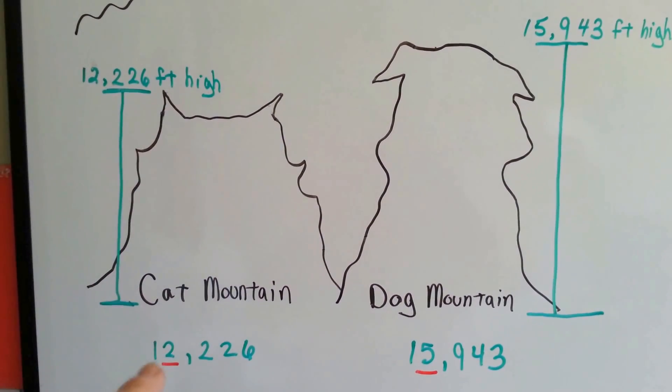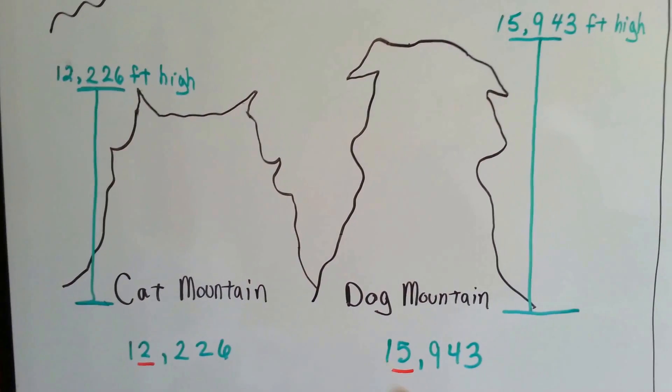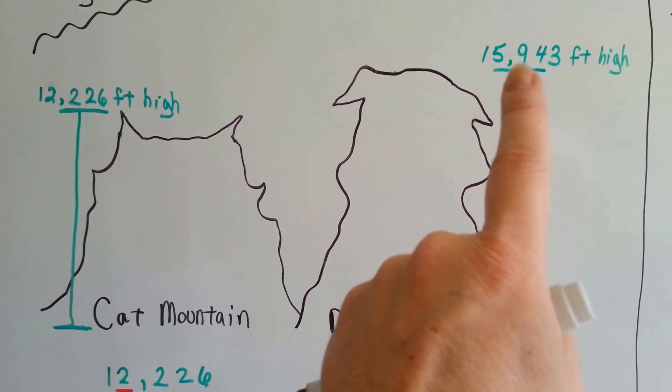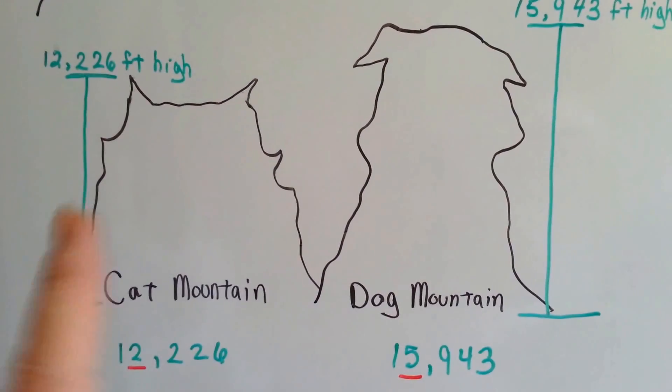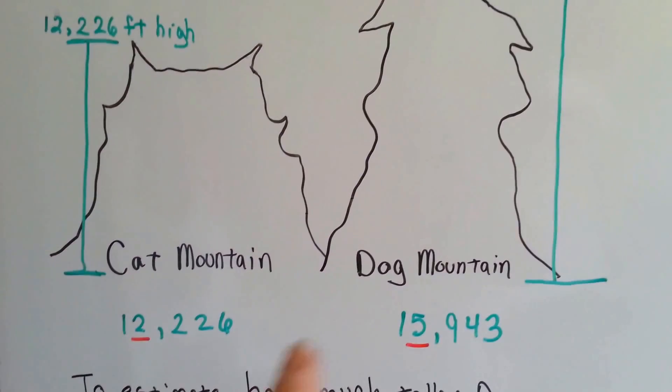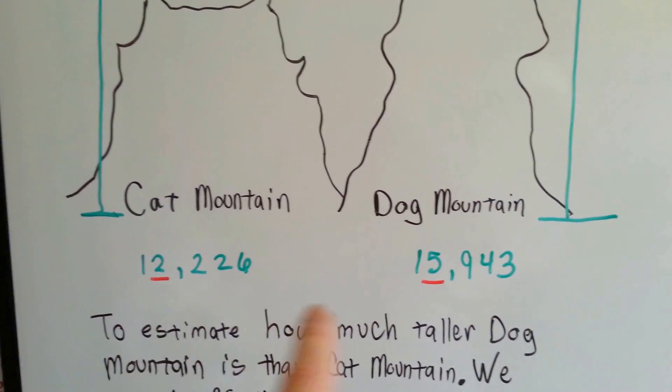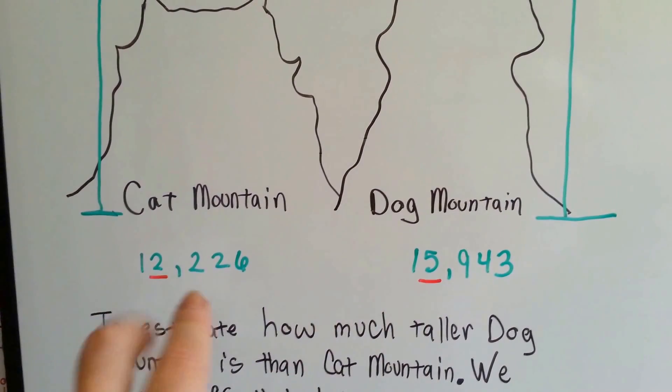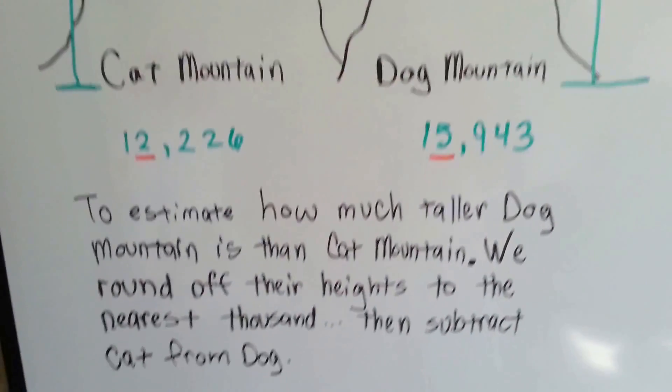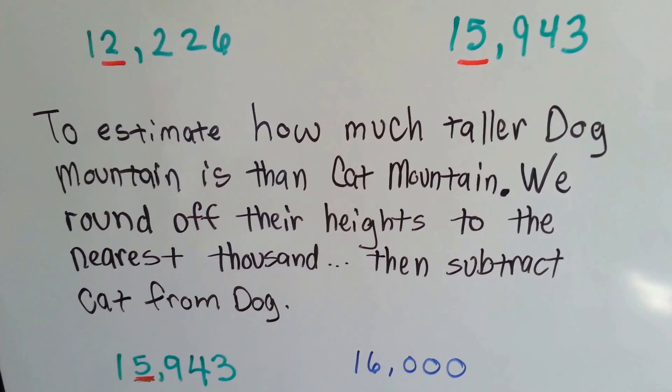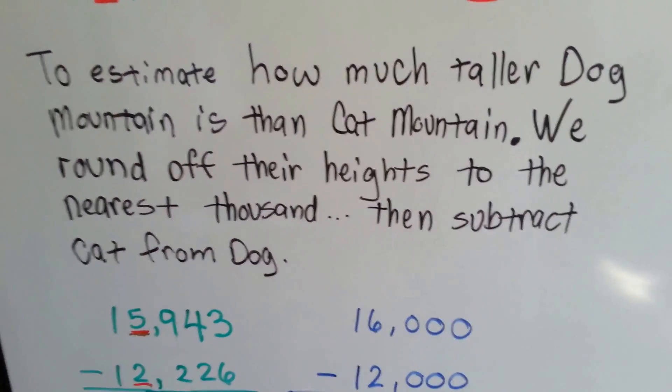Cat Mountain is 12,226 feet high. Dog Mountain is 15,943 feet high. If we wanted to subtract them by estimation, we'd have to round these two numbers off. Well, because they both have a 1 in the ten-thousandths place, we're going to round off the one-thousandths place. We round off their heights to the nearest thousand, and then subtract Cat from Dog.